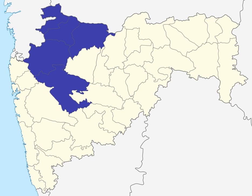Nashik Division is one of the six divisions of India's Maharashtra state and is also known as North Maharashtra. The historic Khandesh region covers the northern part of the division, in the valley of the Tapti River. Nashik division is bound by Konkan division and the state of Gujarat to the west, Madhya Pradesh state to the north, Amravati division and Marathwada to the east, and Pune division to the south.